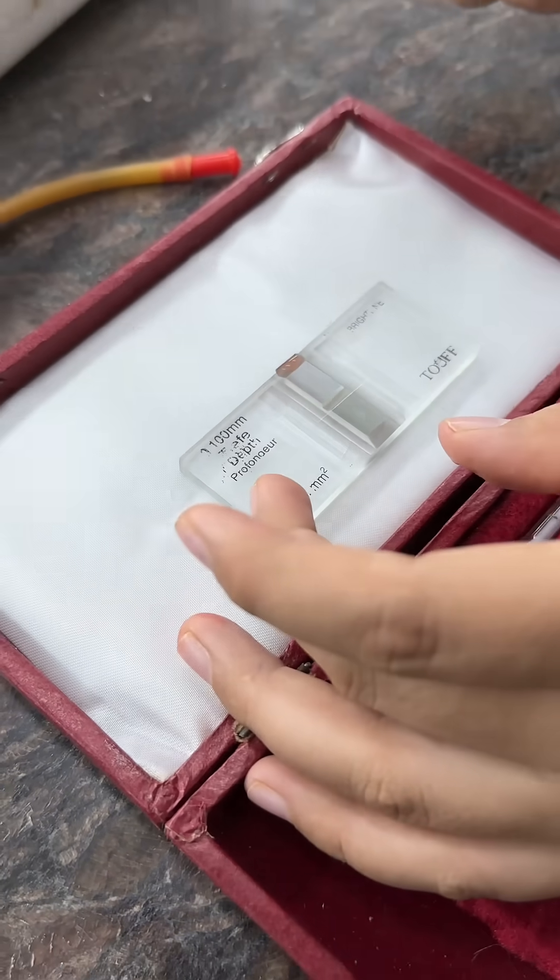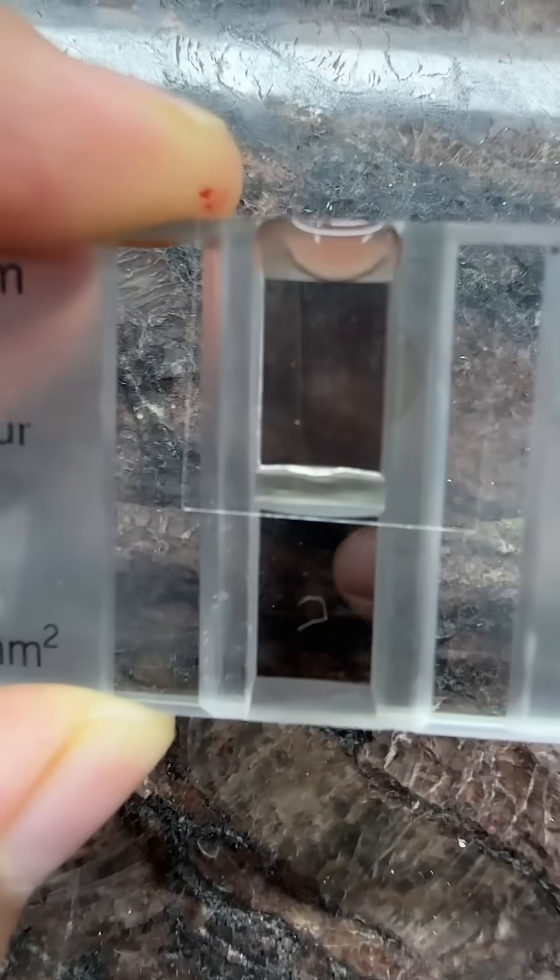Then focus Neubauer chamber under 40x and count cells in these medium sized squares.